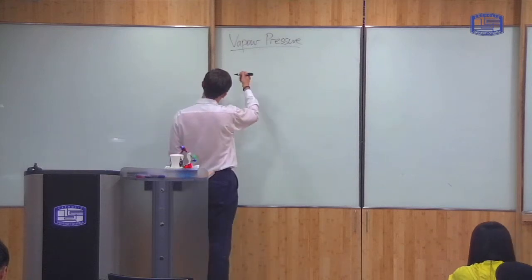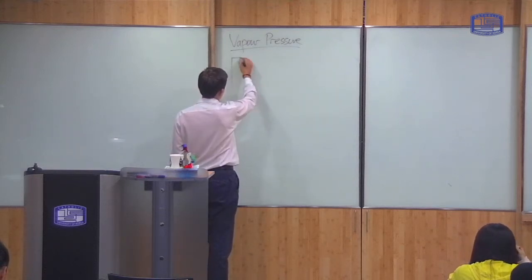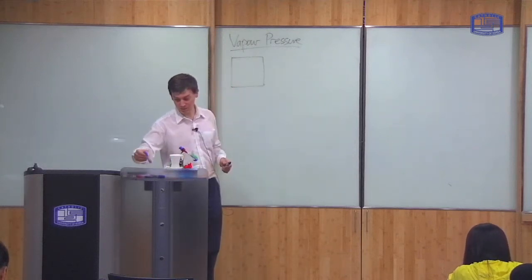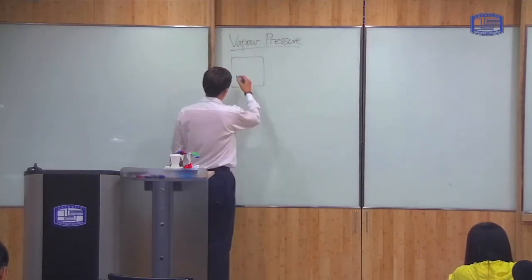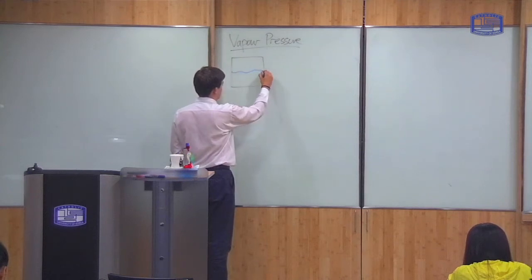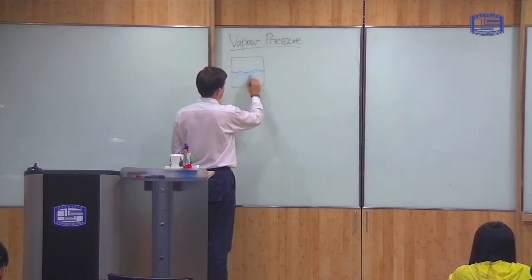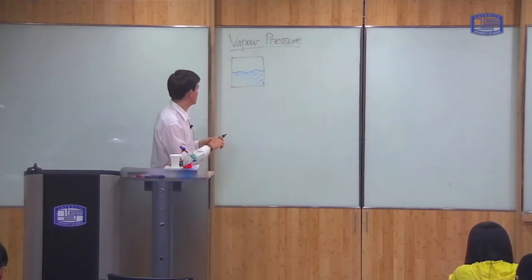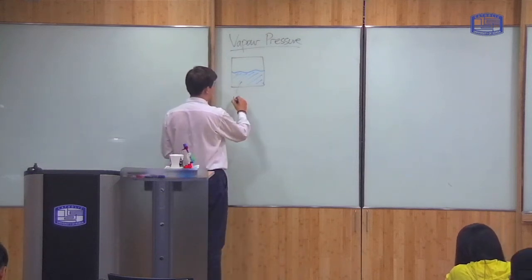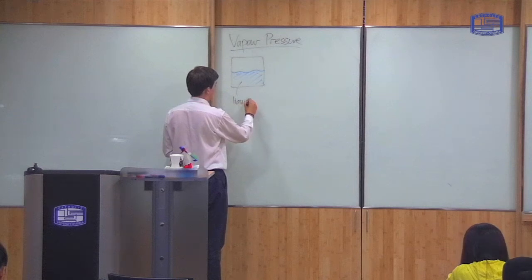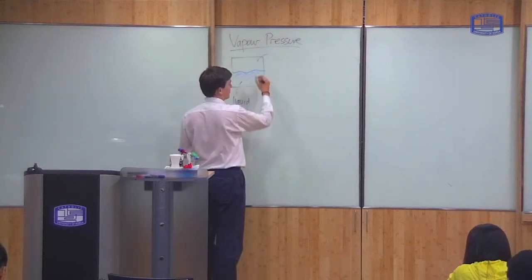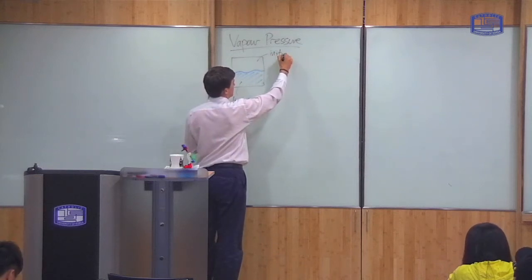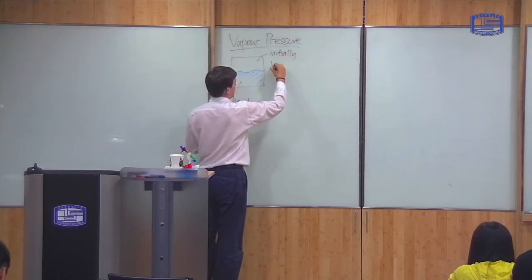The start is something similar to what we've seen before. Suppose I've got a box and I fill this box with some liquid — for example it could be water, or some kind of pure liquid, not a mixture. So in here we have a liquid, and I'm going to suppose that initially the top of the box is empty. So initially this is a vacuum.